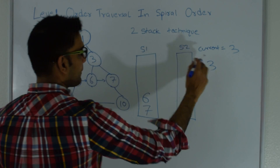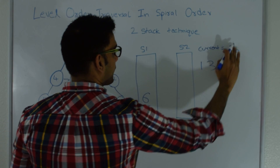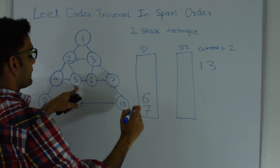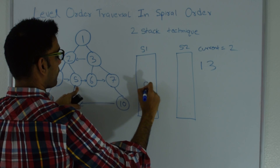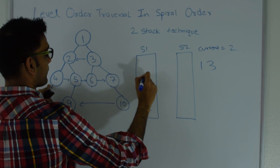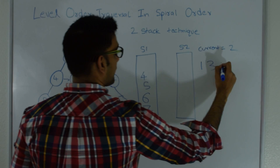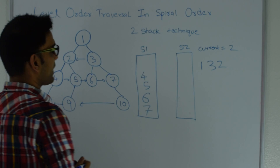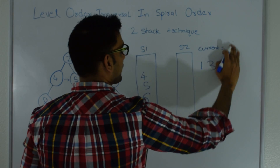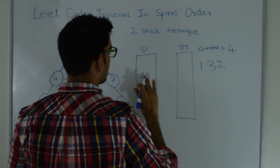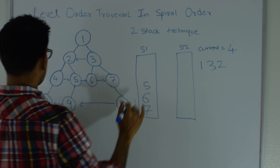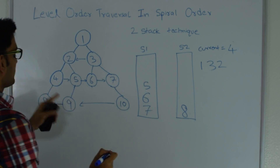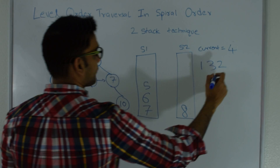I pop again from stack 2 — current becomes 2. 2 has a right child so I put that into stack 1, and 2 also has a left child so I put that into stack 1, then I print 2. Stack 2 is now empty so I go back to stack 1. I pop from stack 1 — current becomes 4. 4 has a left child so I put that into stack 2. 4 doesn't have a right child, so I print 4.